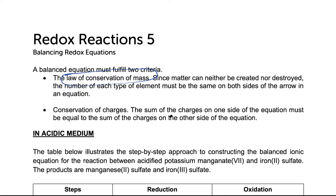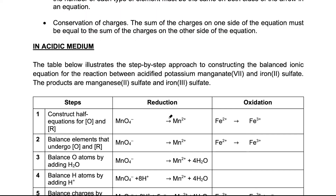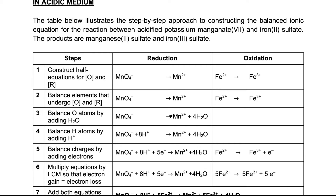I'm going to show you the step-by-step approach first, and then we'll practice a few examples. You might have learned that acidified potassium manganate 7 is a strong oxidizing agent and it is able to oxidize iron 2 ions to iron 3 ions. This reaction happens under acidic conditions. Because redox is made of two processes — reduction and oxidation — we construct separate half equations for these reactions first.